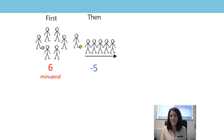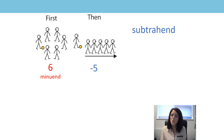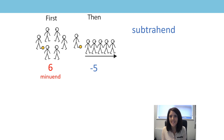First, there were six children playing football. Six is the minuend. Then five children went home. The subtrahend tells us how much is being subtracted from the minuend. The subtrahend is five because five children are going home.